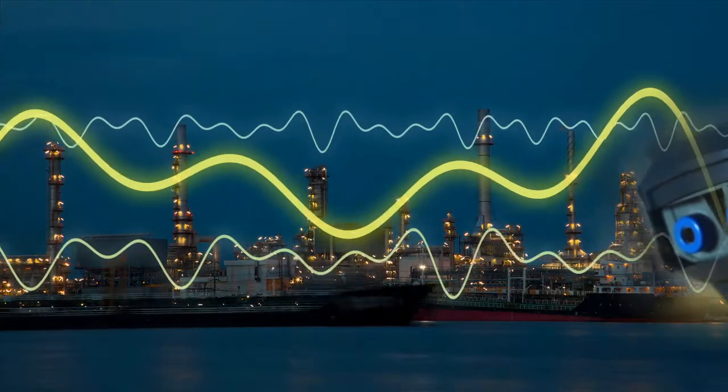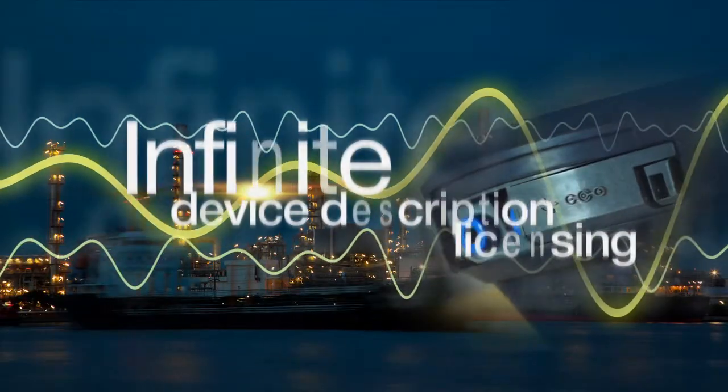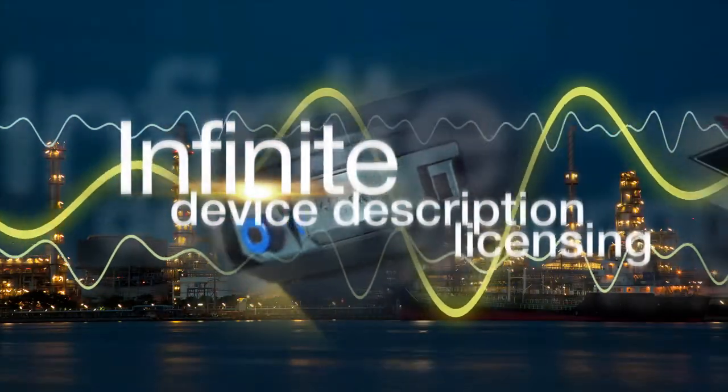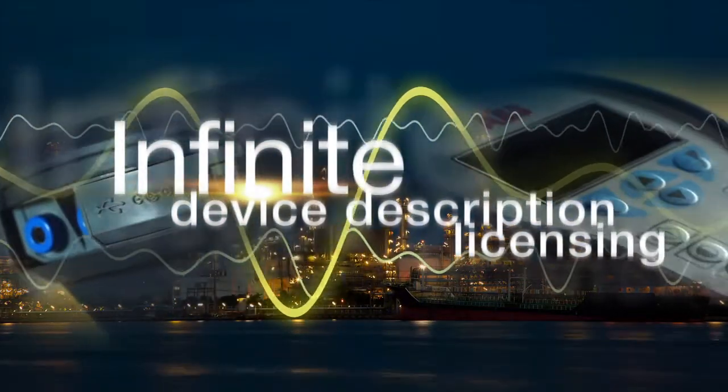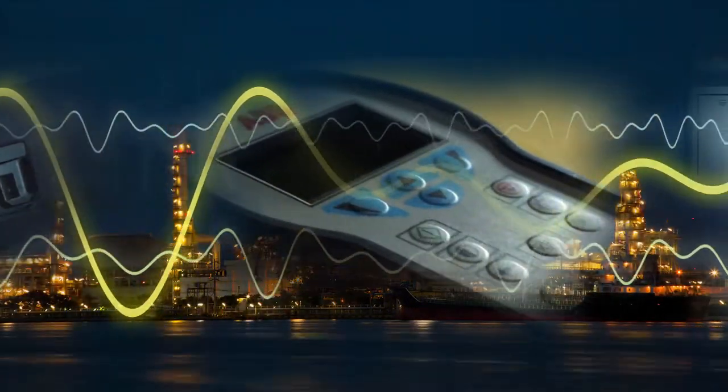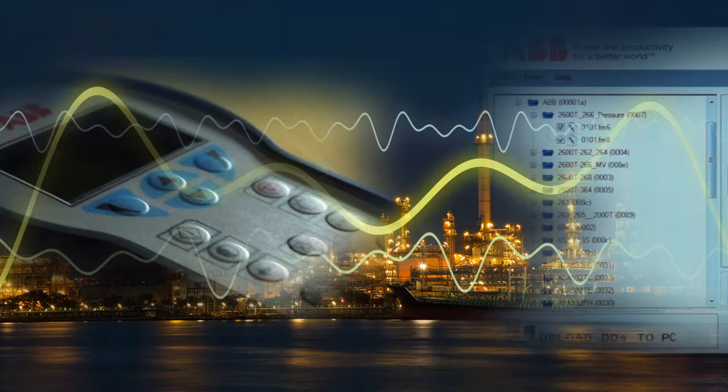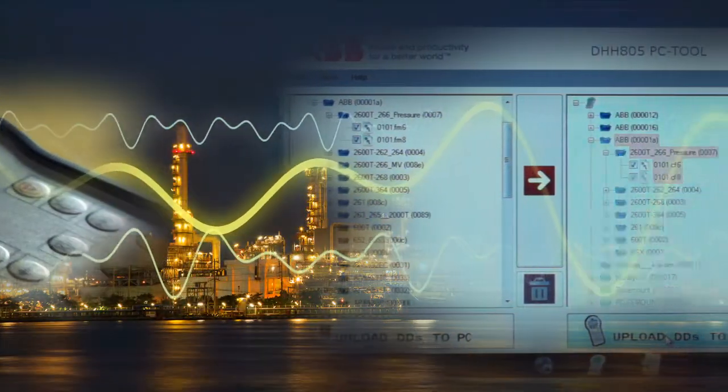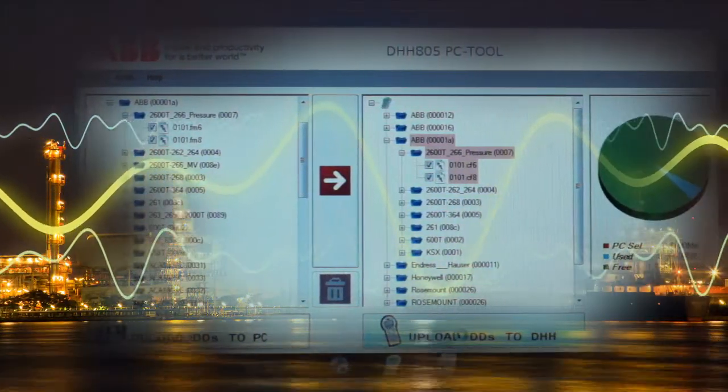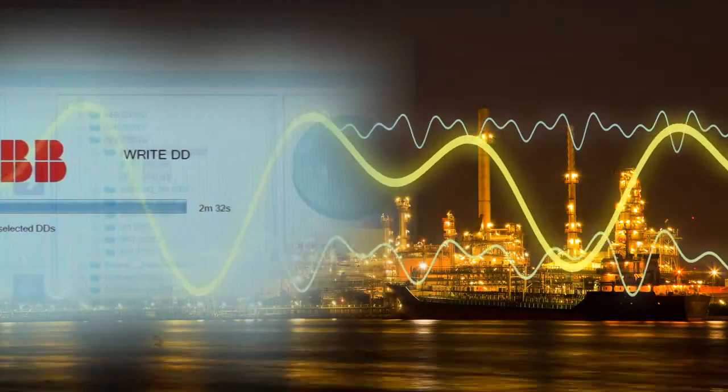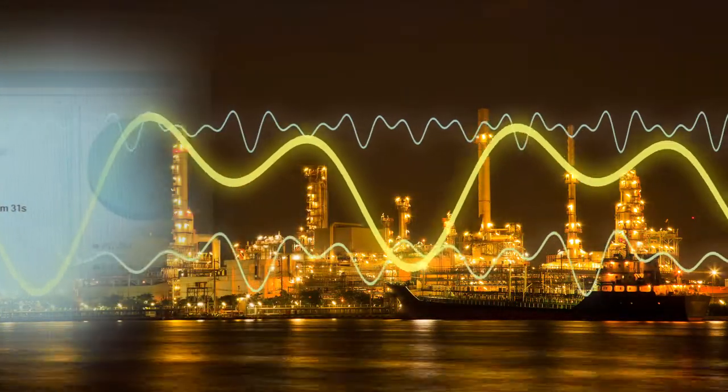Moreover, with the DHH805's infinite device description licensing, the cost of renewing expired licenses is eliminated. When you need to update or load a new device description for a HART device, you can do it free of charge using either the software delivered with the DHH805 or downloaded directly from the HART Foundation website.